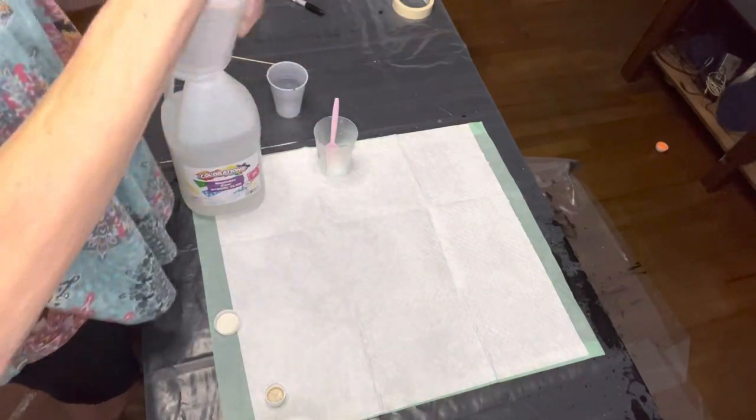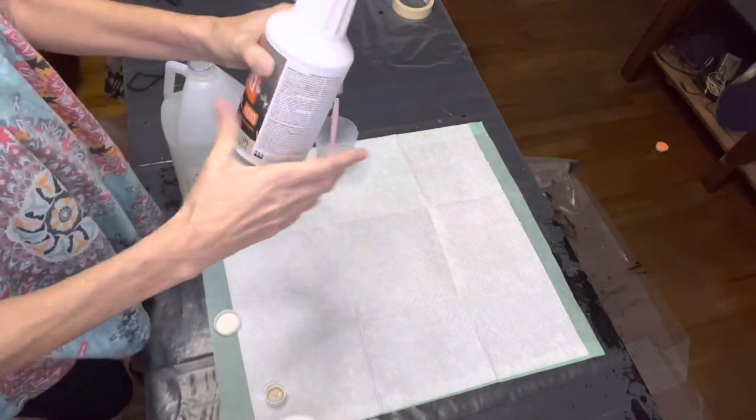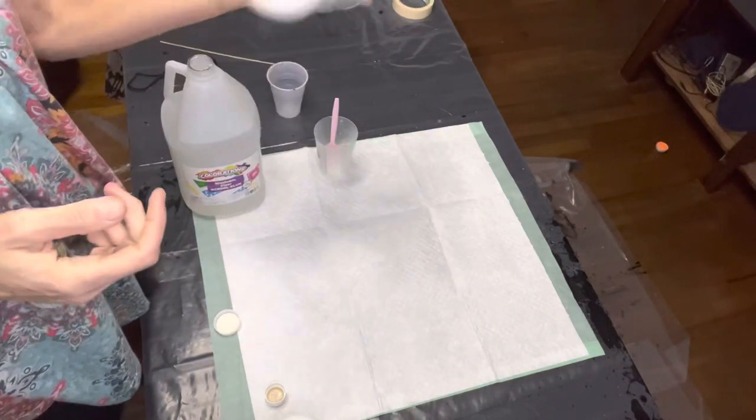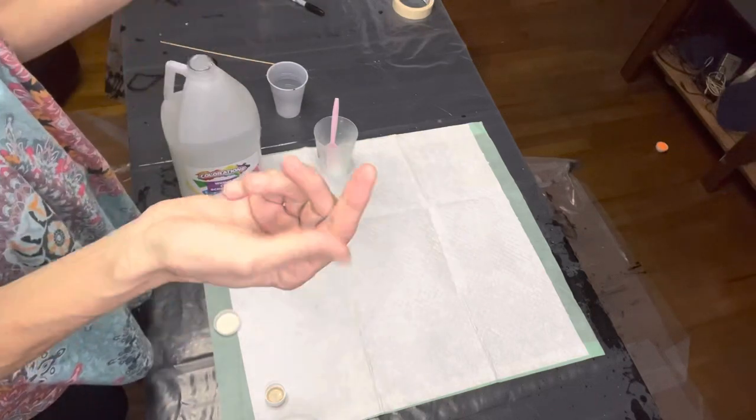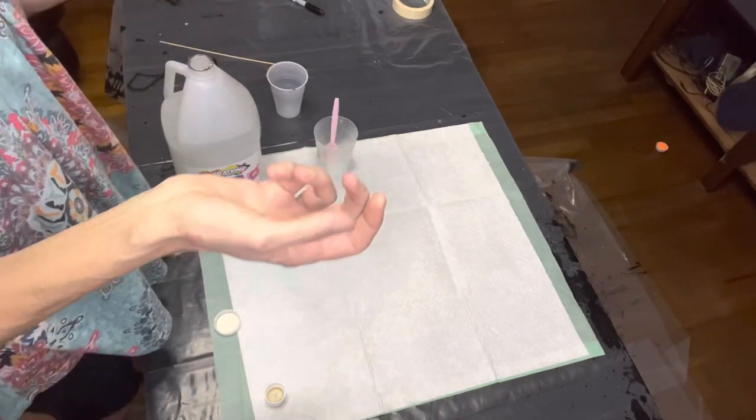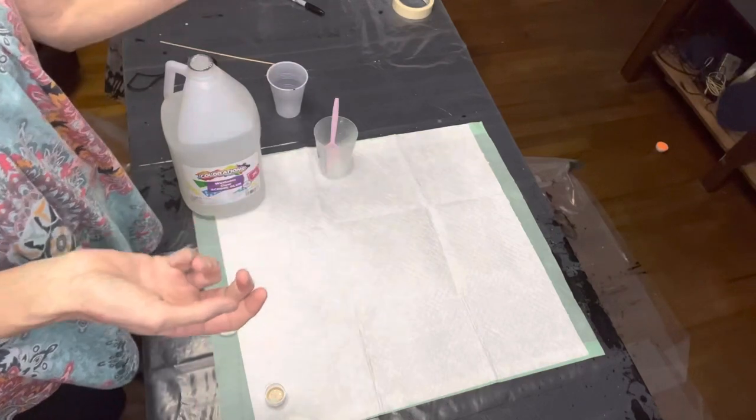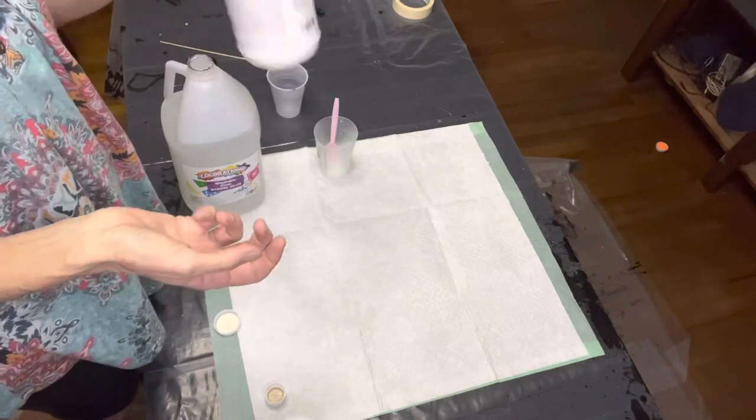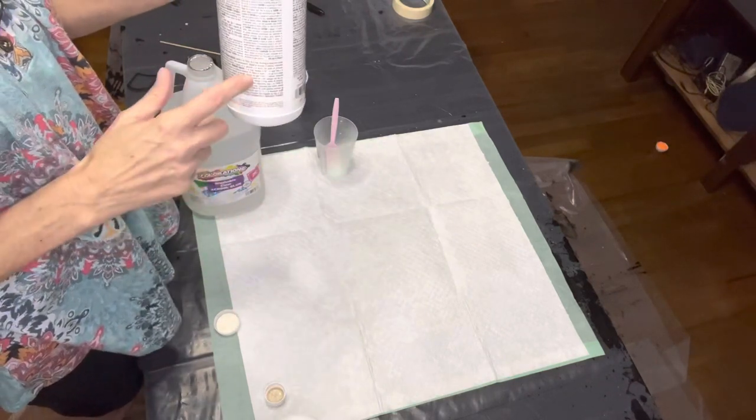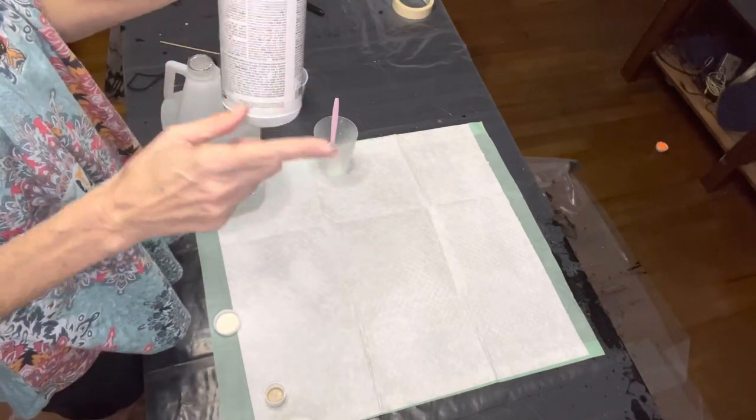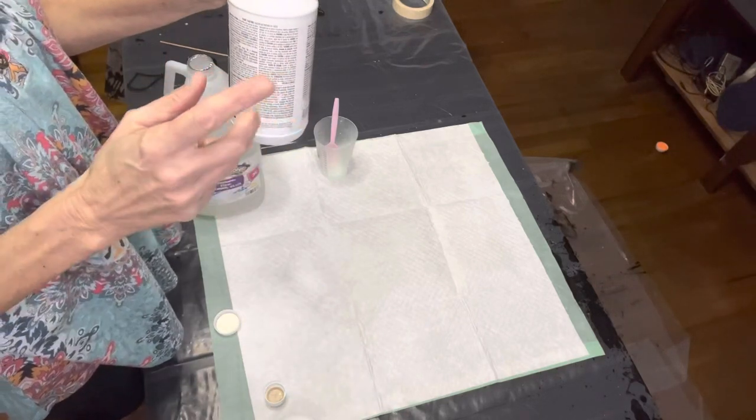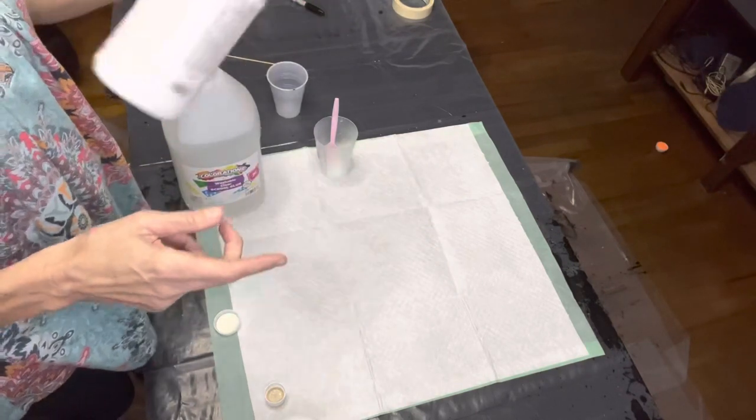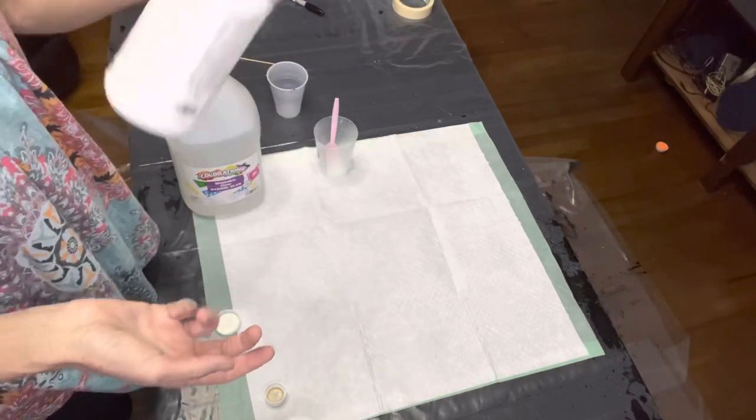And again, I haven't worked with this yet. So it may be like Floetrol that you need a strainer when you pour your Floetrol to keep any little things from falling in your paint. And then the directions is you can either use one part paint to one part of your pouring medium, or you can use two parts pouring medium to one part paint. I guess it just depends on the consistency that you're looking for.